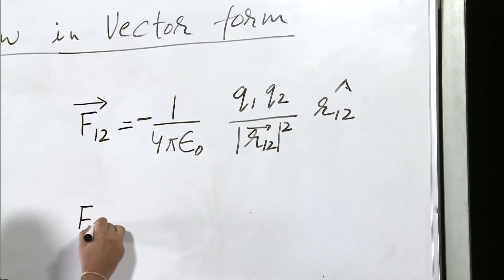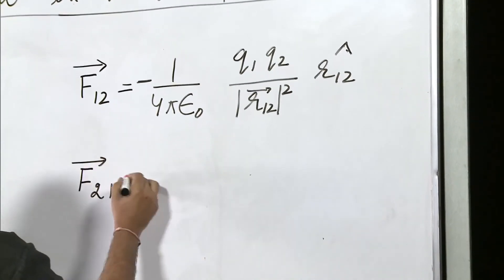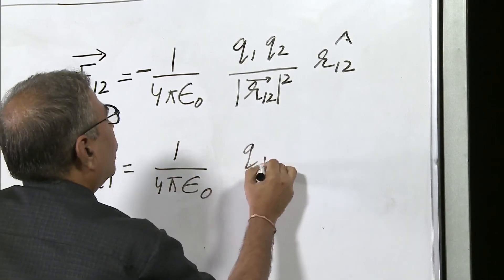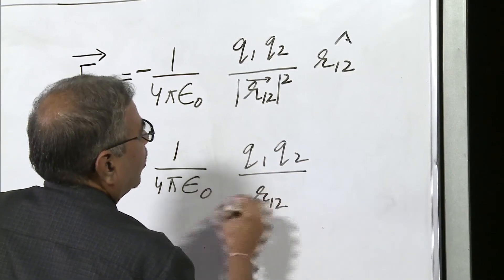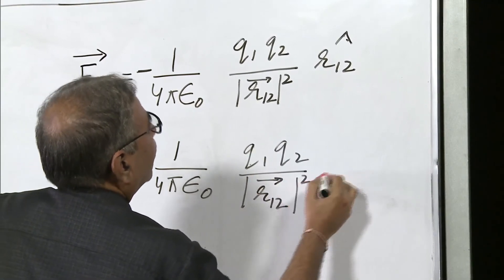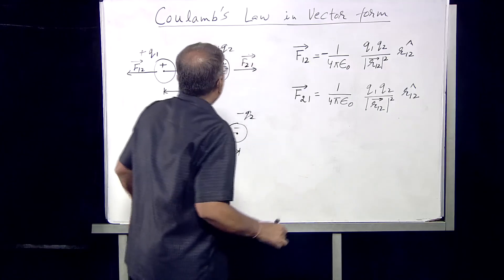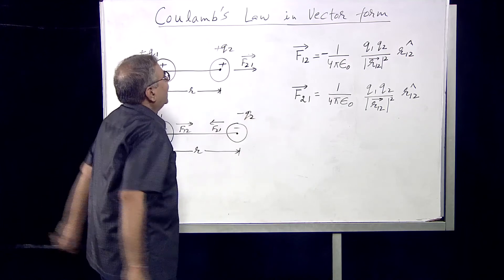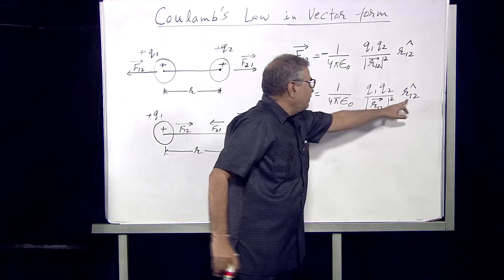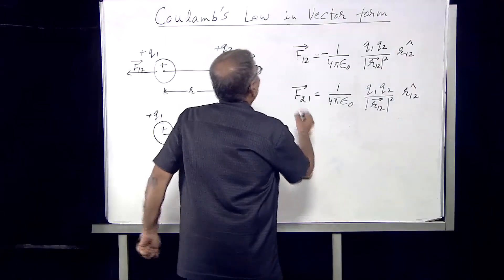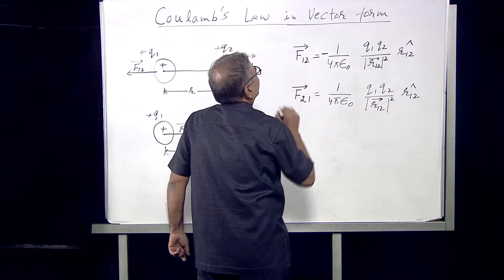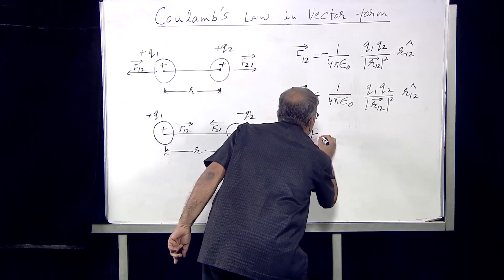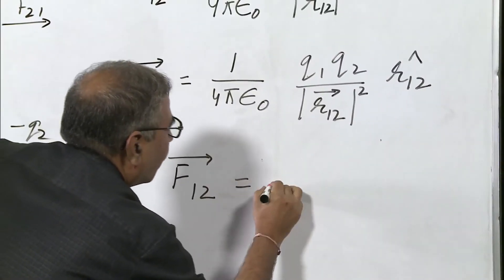Now let us write the equation for f21. f21 is equal to 1 upon 4·π·ε₀ · q1·q2 upon r12 magnitude squared, multiplied by r̂12. f21 is from left to right and r̂12 is also from left to right, so they have the same direction and there is no negative sign. Comparing the two equations, the right-hand sides are the same except for the negative sign, so we can write f12 is equal to minus f21.